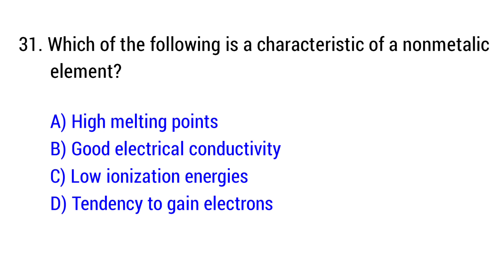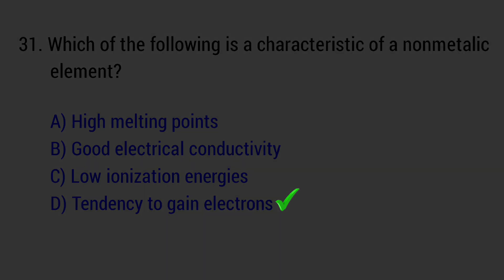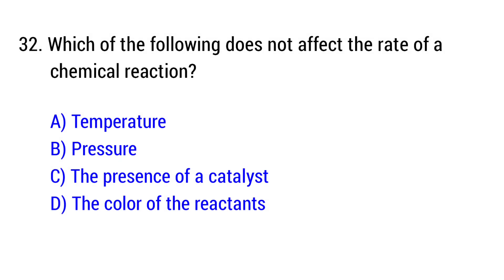Question number 31. Which of the following does not affect the rate of a chemical reaction? The right answer is option D, the color of the reactants.